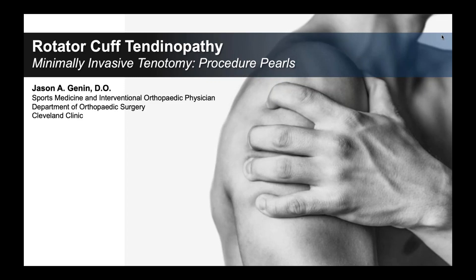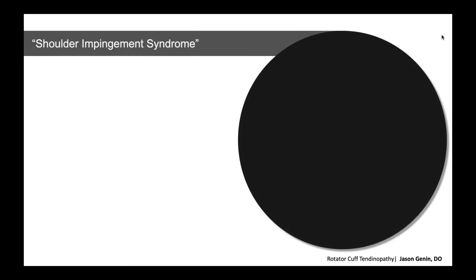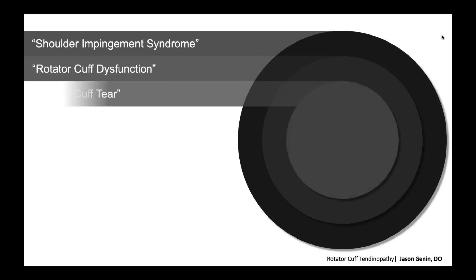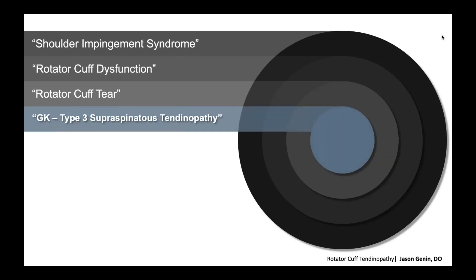What we hope to share today is our approach, our thought process during the procedure itself, and certainly the post-procedure rehabilitation — all of which play an integral role in having a successful practice utilizing minimally invasive tenotomy for you and your patients. It's always difficult when we start thinking about how to identify tendons. We see people come into the office with diagnoses of shoulder impingement syndrome, rotator cuff dysfunction, rotator cuff tear whether partial or full, bursitis. At the clinic, my colleague Dr. King and I want to treat the underlying tendon tissue — what are we treating, and how are we treating it?